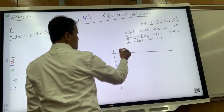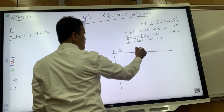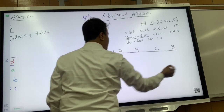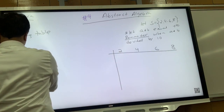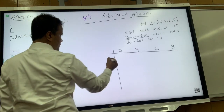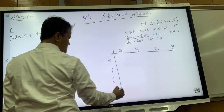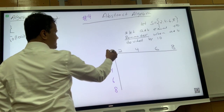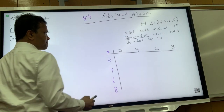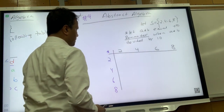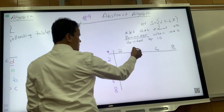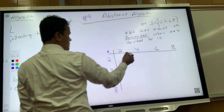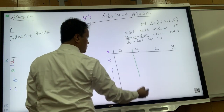Let's create a table. I'm going to put the four elements on the top and four elements on the side. The elements are 2, 4, 6, 8. Now let's put the operation on the top and investigate whether it is a binary operation. Let's create boxes big enough to do the modular arithmetic.